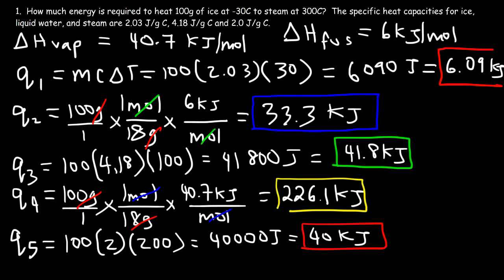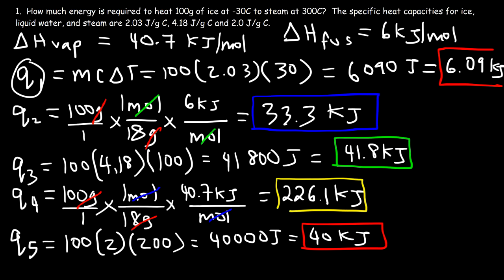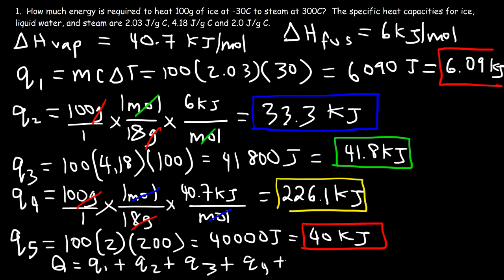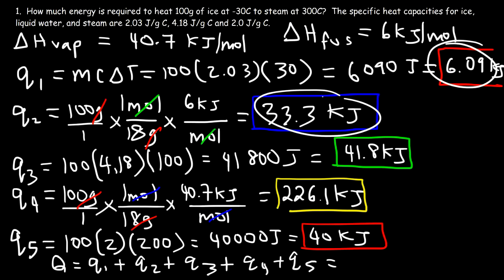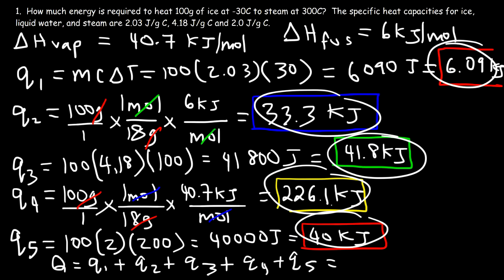Now we have all five values: Q1, Q2, Q3, Q4, and Q5. The total energy is simply their sum: 6.09 plus 33.3 plus 41.8 plus 226.1 plus 40, which equals 347.3 kilojoules.